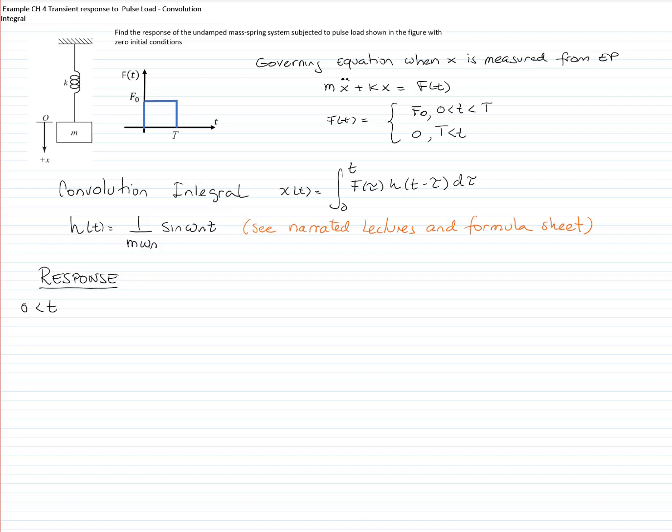The first response that we will find will be valid for times greater than 0 and less than capital T. The response will be 1 over m omega n, the integral. It's evaluated in tau is F sub 0 because it's a constant force, and then I have sine evaluated in t minus tau, d tau.